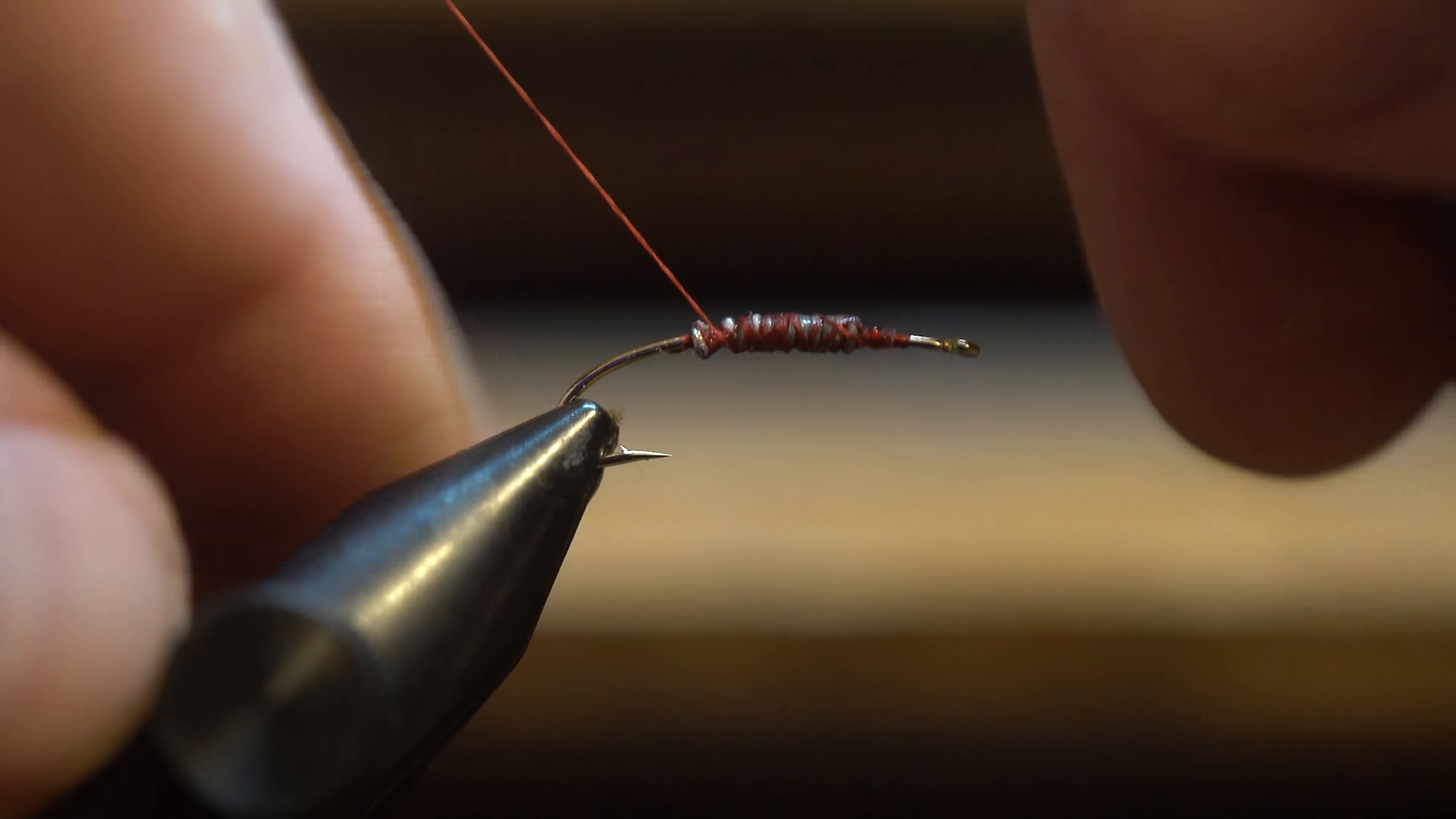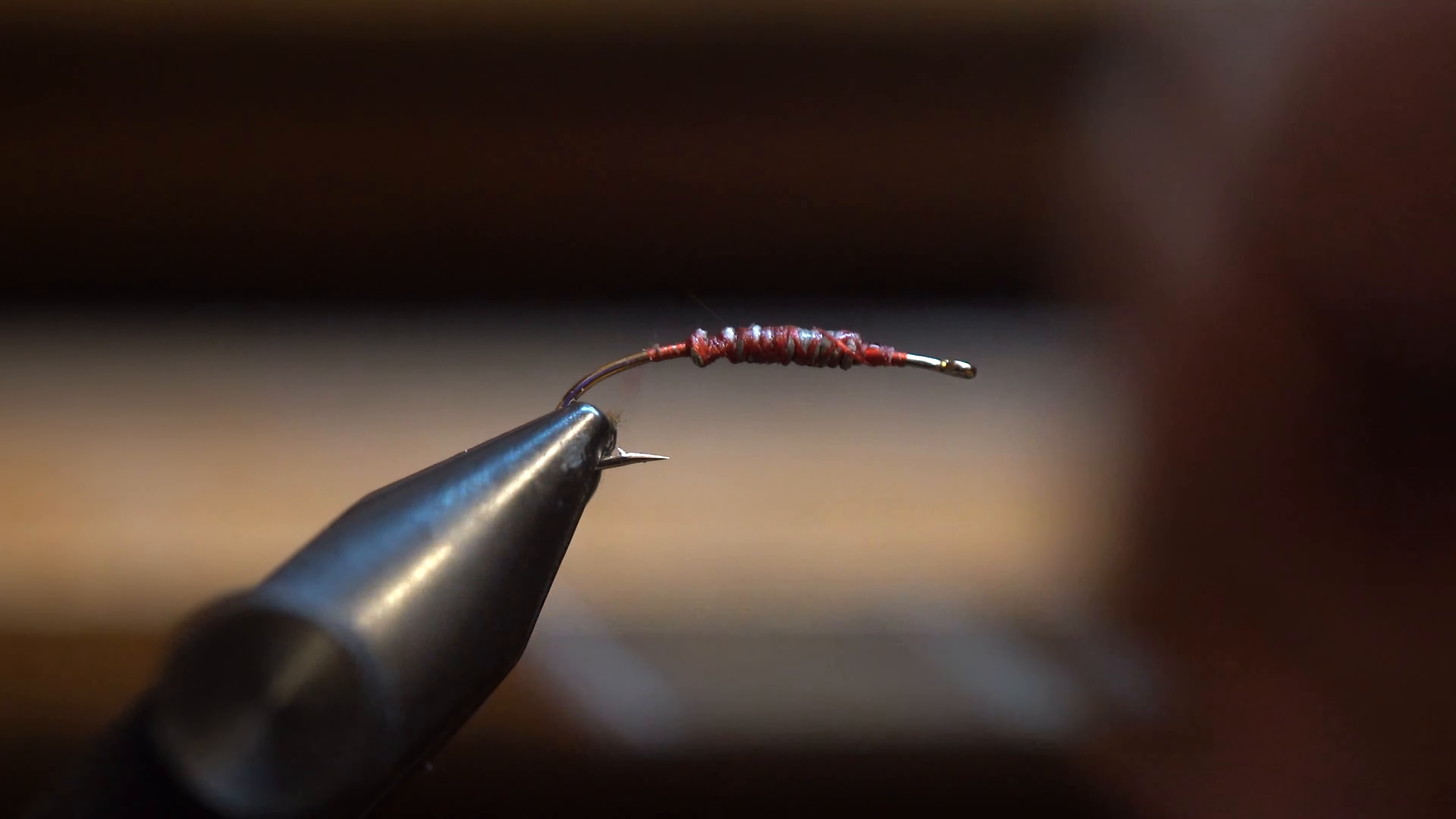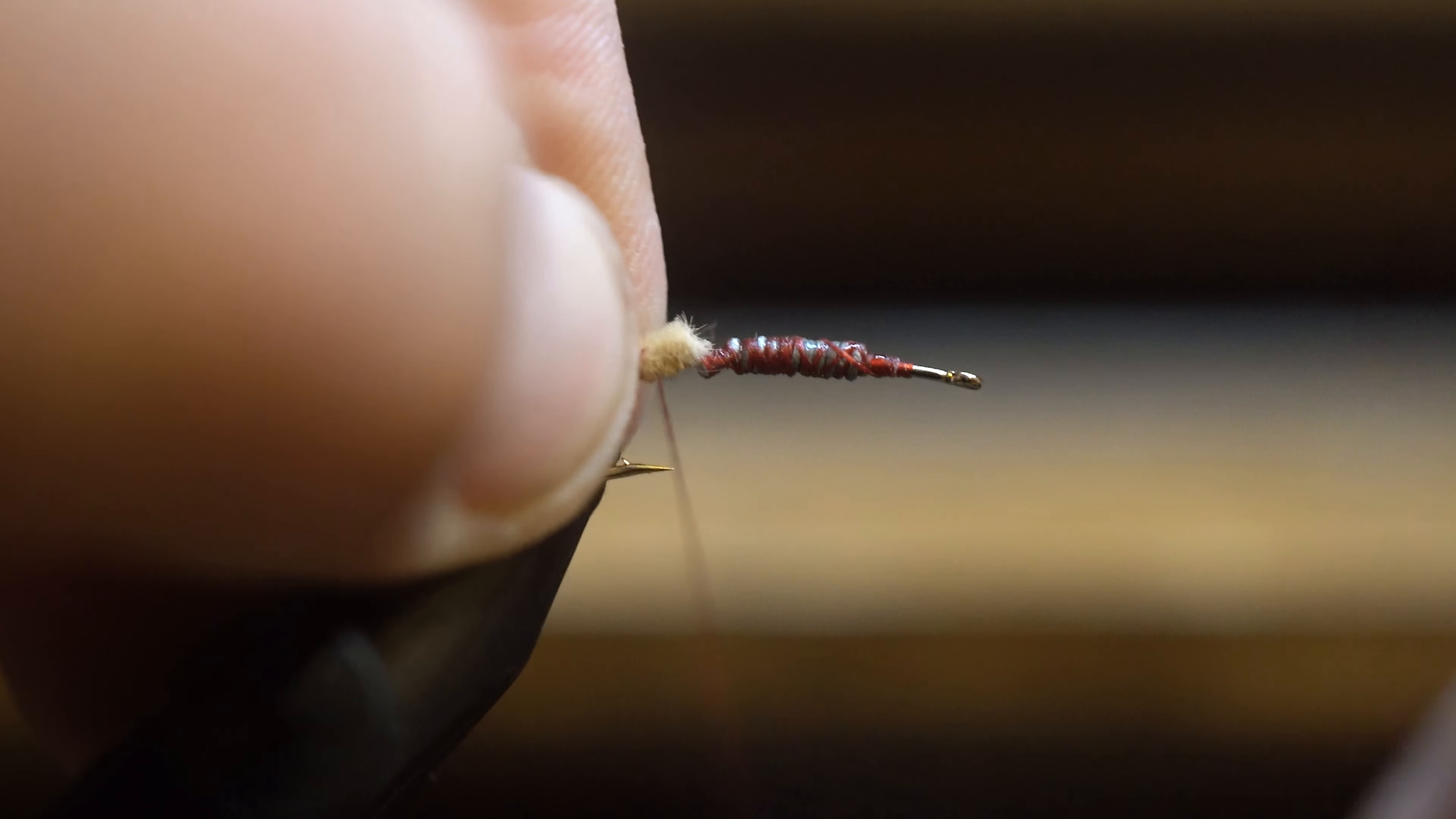Okay, and you can see I'm using a red thread today. I'll kind of mess that wire up. So, I like to get some red wire, so my worm's got a little bit of tint to it. Today, we're using a Daiichi 1270, size 12 hook.